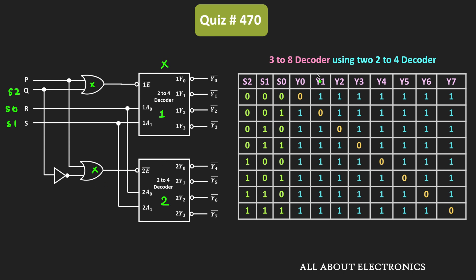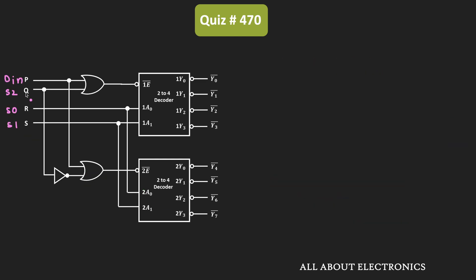Now we need to use this 3-to-8 decoder as a demultiplexer. As mentioned earlier, for that we need to apply the demultiplexer input at the enable pin. So we apply the DIN input at the P terminal, and connect DIN to the enable pins of both decoders via the OR gates. We have already seen how connecting Q, R, and S terminals to S2, S0, and S1 makes the circuit work as a 3-to-8 decoder. Now let us understand how connecting DIN to the P terminal makes this circuit work as a demultiplexer.